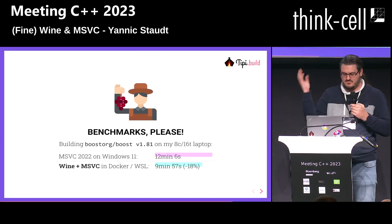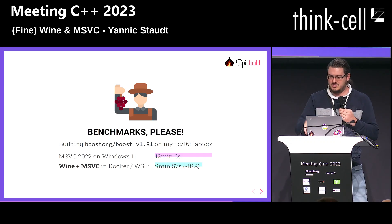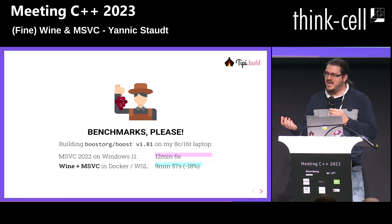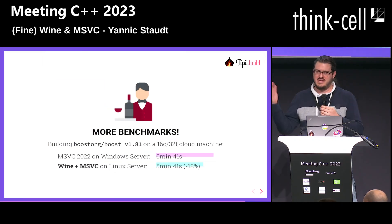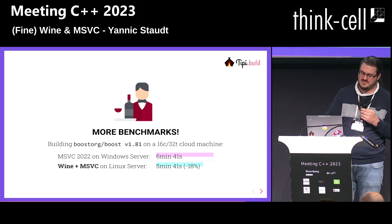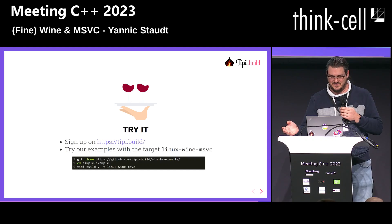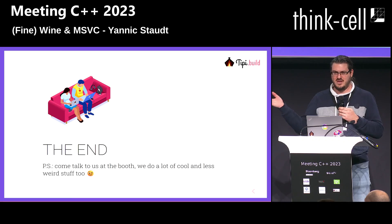Here are a few benchmarks. We built all of Boost on these machines. Even incurring the cost of Docker and Hyper-V virtualization — because this was running in Docker on a Windows laptop — we get around 18 percent improvement. And if you run the whole thing in an environment that isn't thermally limited, you get even a bit more. It's really interesting. You can try it by activating the trial and giving us a call. Come talk with us at the booth.